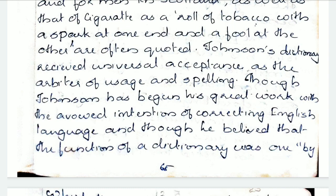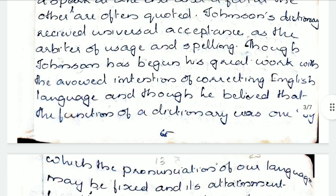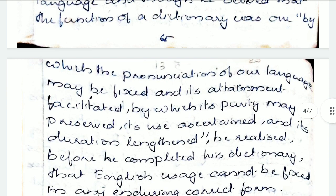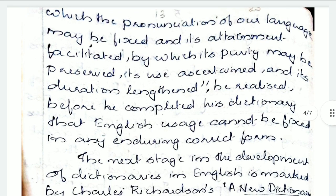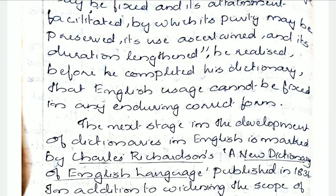Though Johnson began his great work with the avowed intention of correcting the English language, and though he believed that the function of a dictionary was one by which pronunciation should be fixed, he couldn't actually attain all these things. He wanted to make language more pure. But finally he understood that English can't be fixed like that — English is a stress-based language and not syllable-based. So there is always a limit to fixing meanings as well as spelling and pronunciation. There are many Englishes, and we have to accept it — that is what he understood. That's the importance of Dr. Johnson's dictionary.